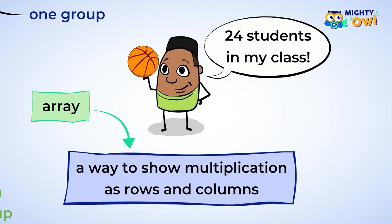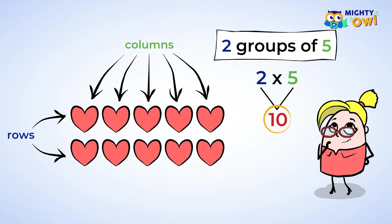Multiplication can be shown by using an array, which uses rows and columns. The number of groups is equal to the number of rows, and how many objects you have in each group gives you the number of columns.